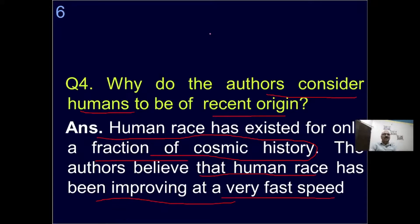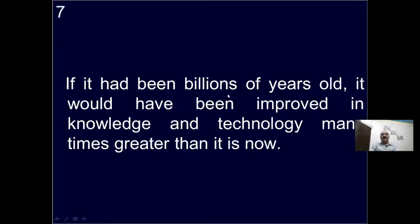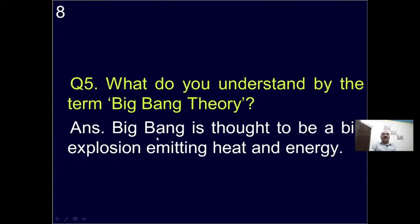Before the human race, there was vegetation on earth, various living beings came and went, dinosaurs also came and went. If the human race had been billions of years old, if it had come earlier, it would have been improved in knowledge and technology many times greater than it is now.